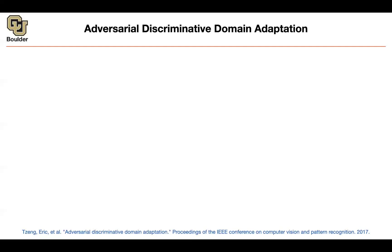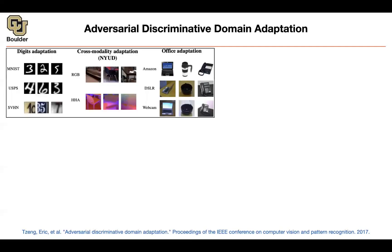We are going to continue along those lines and try to make things better and better. In terms of the big picture and the type of data we are going to be exploring: we have digit adaptation, for instance adapting from MNIST as the source domain to USPS or street view house numbers. You can also do adaptation across modality — for instance, from RGB images to depth. This dataset we mentioned before has examples from the Amazon website with white backgrounds and high-quality images, or images you take yourself with a camera which have background objects.